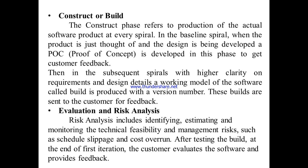The construction phase refers to actual coding and programming — production of the actual software product at every spiral. In the baseline spiral, when the product is just being thought of and the design is being developed, a proof of concept (POC) is developed to get customer feedback. In subsequent spirals, with higher clarity on requirements and design details, a working model called a build is produced with a version number and sent to the customer for feedback.